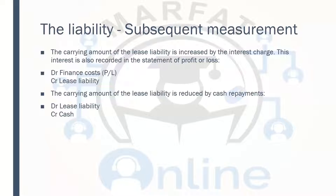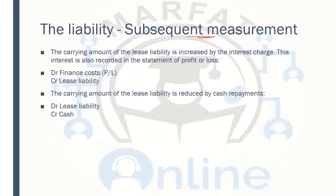Now we have the subsequent measurement of the lease liability. Initially, the lease liability is measured at the present value of the lease payments. Now we need to see the subsequent measurement of it. When it's a lease liability, there will be interest involved in the calculation, based on the implicit rate. The finance cost will increase the lease liability — debit finance cost, credit lease liability.